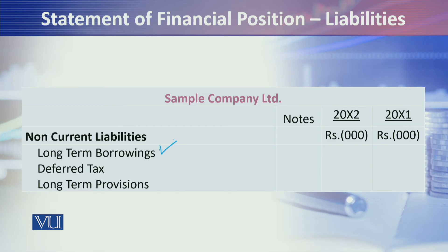In long-term borrowings, the borrowings borrowed for long-term — more than one year, like borrowings taken for 5–10 years — will come under long-term borrowings. Deferred taxation is a slightly technical concept. Understand it this way: it is not a current obligation on the entity, but it is worked out to eliminate the mismatch of tax demand with the profit calculated on an accrual basis. To remove that mismatch, there is a deferred taxation entry, and since it is not a current liability, we show it in non-current liabilities.